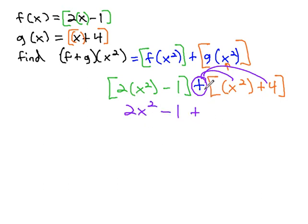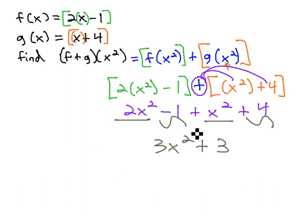Well, positive times positive x², that's not going to change anything. x² + 4, and then we can combine like terms. 2x² and x² is 3x². Negative 1 plus 4 is positive 3, and we end up with 3x² + 3.